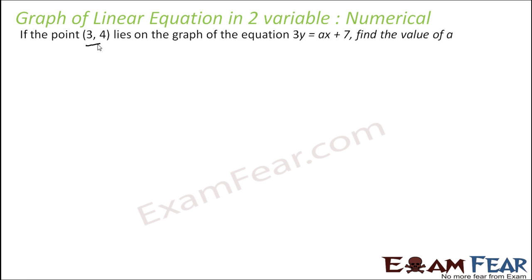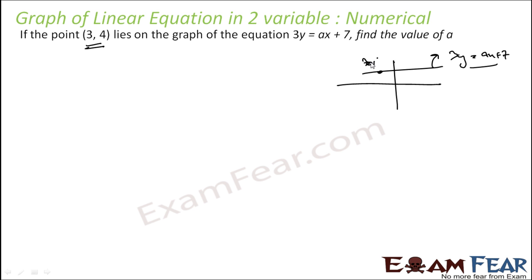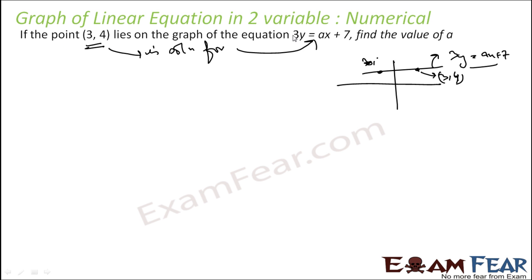The question says that the point (3, 4) lies on the graph of this equation — find the value of a. There is an equation of the line: 3y is equal to ax plus 7. Since (3, 4) lies on this graph, that means (3, 4) is a solution for this linear equation.